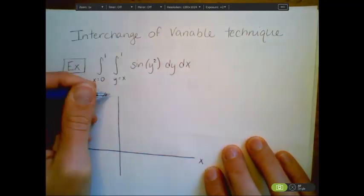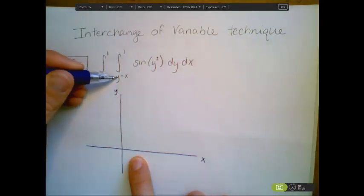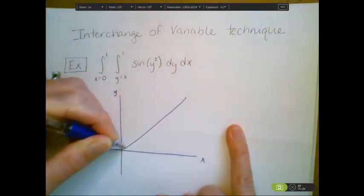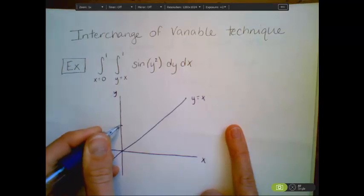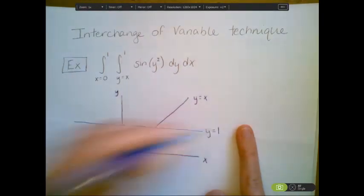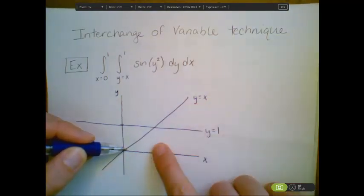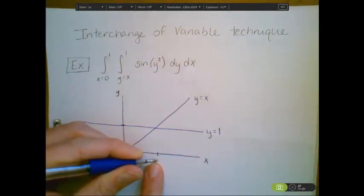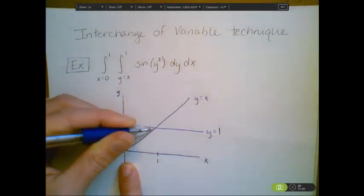Our x values are going from 0 to 1, and our y values are going from the line y equals x to the line y equals 1. Here's the line y equals x, and here's the line y equals 1. The lower bound is the diagonal line, the upper bound is the constant line y equals 1, and our x values go from 0 up to the intersection point at 1. So we're talking about this triangular region.